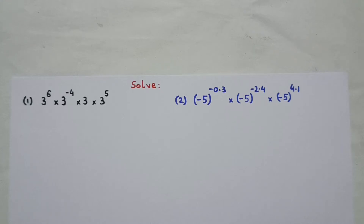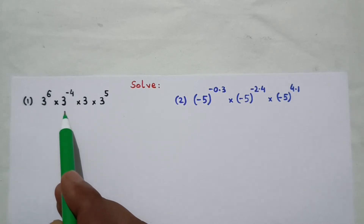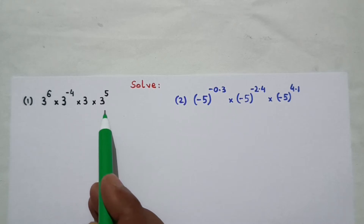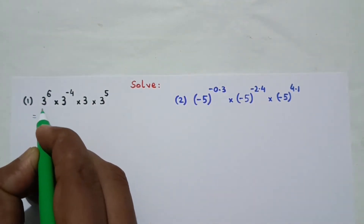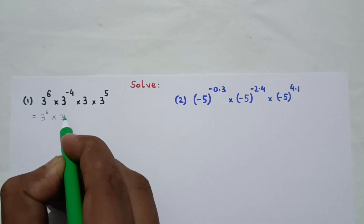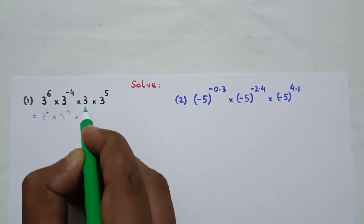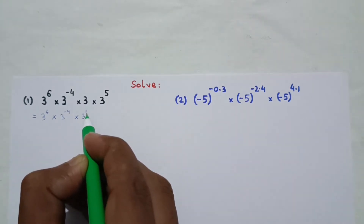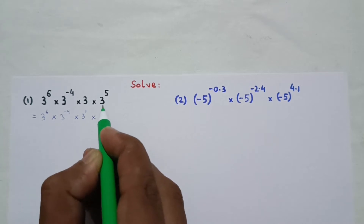Question number 1 says: 3 to the power 6, into 3 to the power minus 4, into 3, into 3 to the power 5. We have to find the value of this expression. Now, this given expression I can write as 3 to the power 6, into 3 to the power minus 4, into 3 — which can be written as 3 to the power 1. So, 3 in power form can be written as 3 to the power 1.